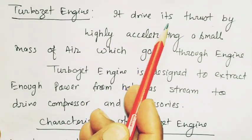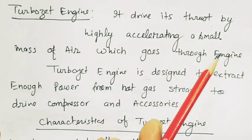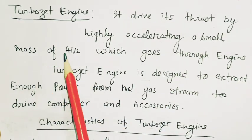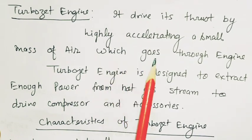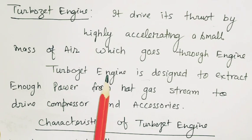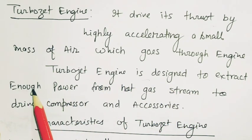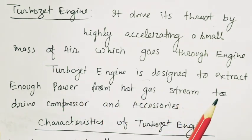A turbojet engine drives its thrust by highly accelerating a small mass of air which goes through the engine. The turbojet engine is designed to extract enough power from the hot gas stream to drive the compressor and accessories.